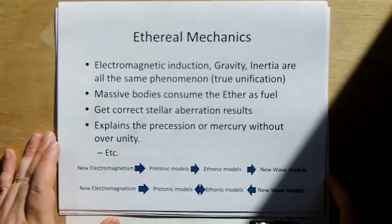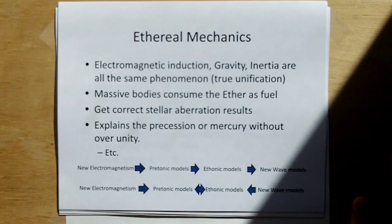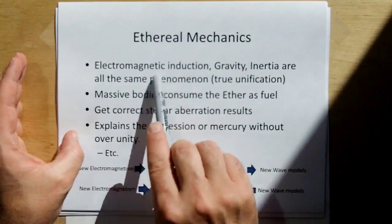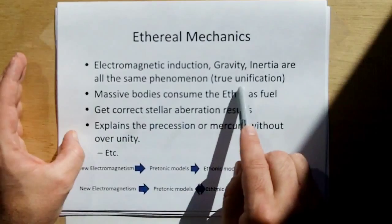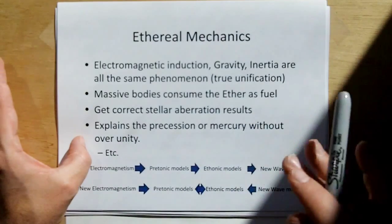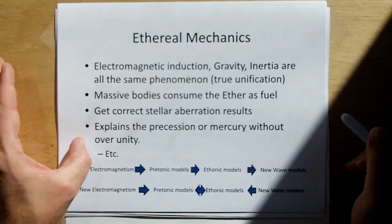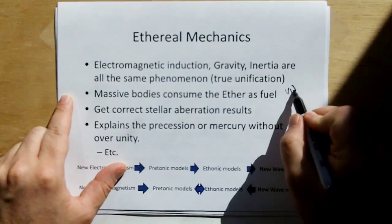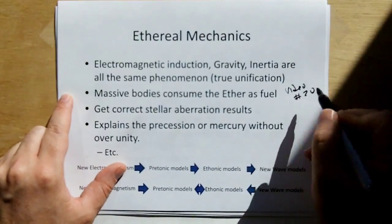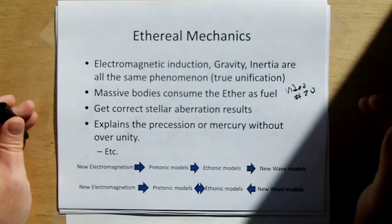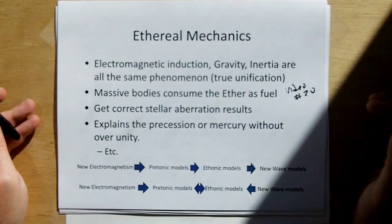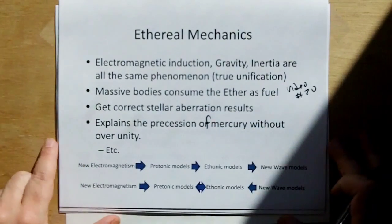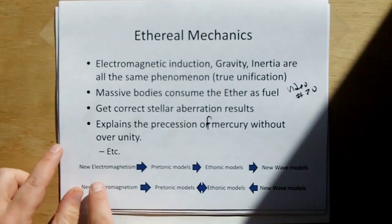And the aether model has been rescued. And that's what my modeling, that's what my theory, theory of mechanics is based on. And what I've been able to do with the limited stuff that I've developed is I've been able to show the electromagnetic induction, gravity, inertia, are all the same phenomenon. A true unification. Not just they're similar, but they're identical in mechanism. The massive bodies consume ether as fuel. Go watch video 21. And I get correct stellar aberration results, which the general theory of relativity screws up, and explains the precession of Mercury without over-unity.